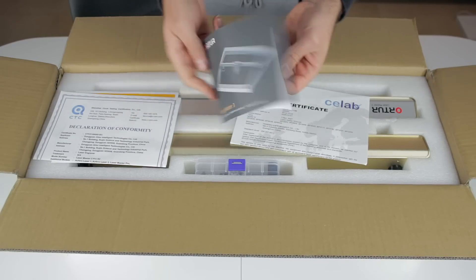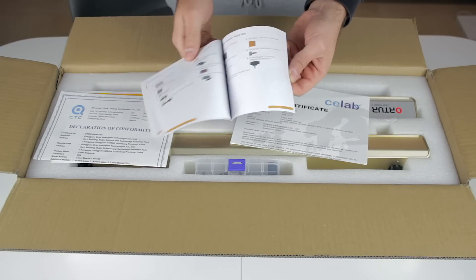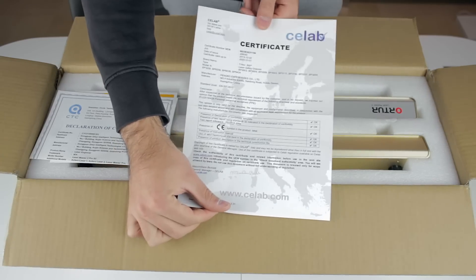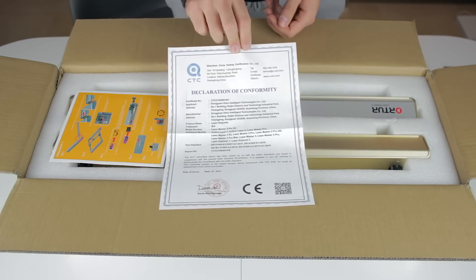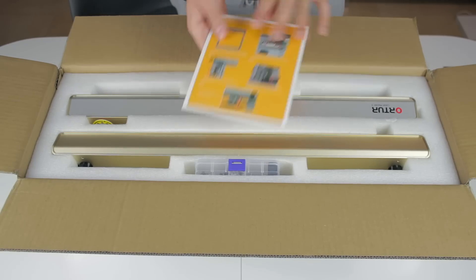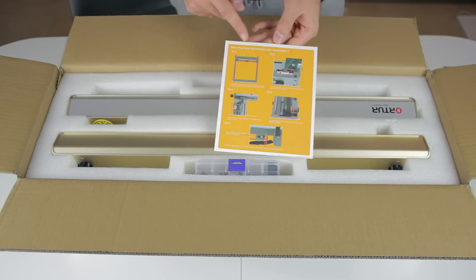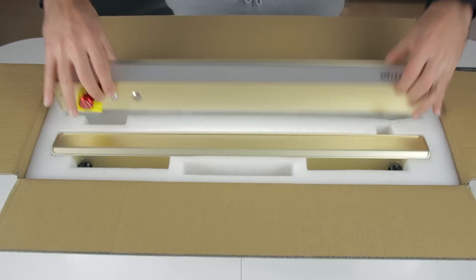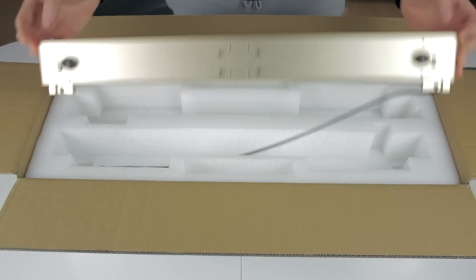At the top we'll find some paperwork, such as the instructions, some kind of certificate, a declaration of conformity, and a paper with some precautions and items that must be checked after installation. Next, we find those beautiful high-quality golden profiles.